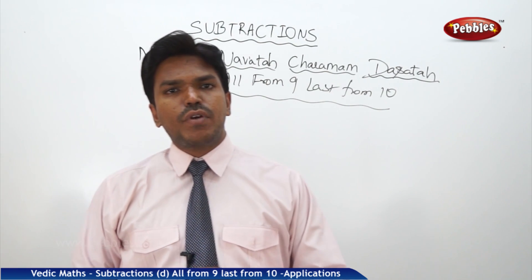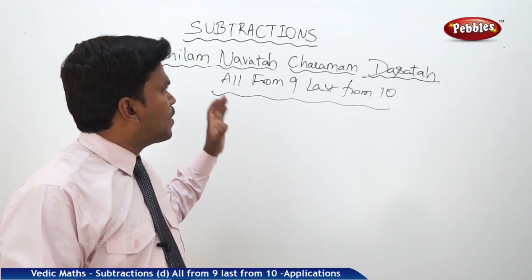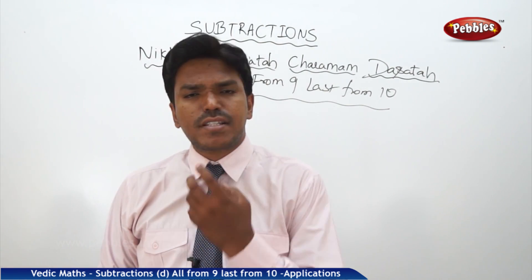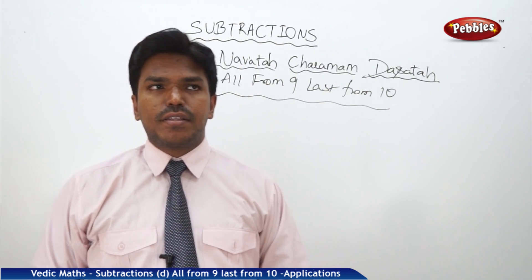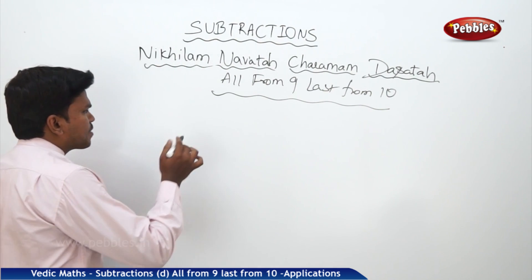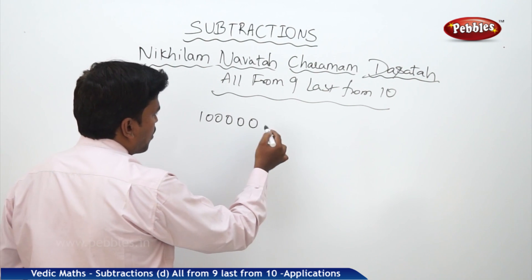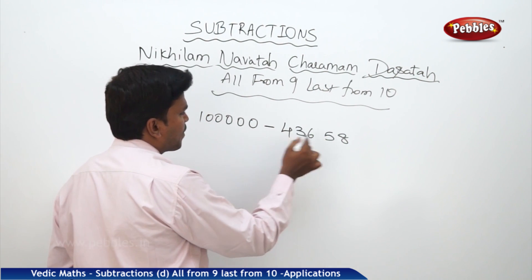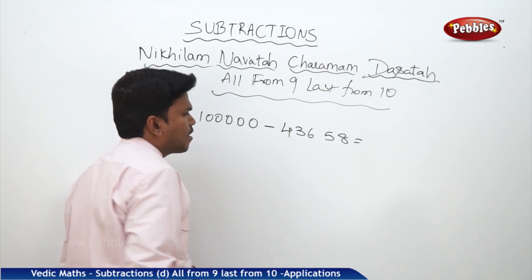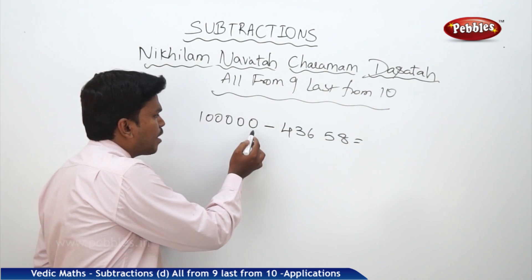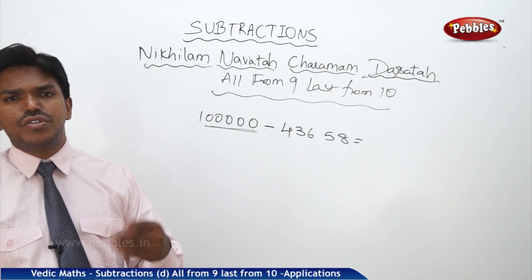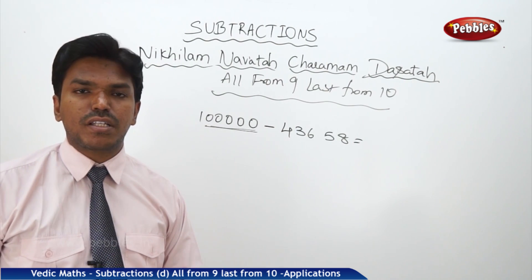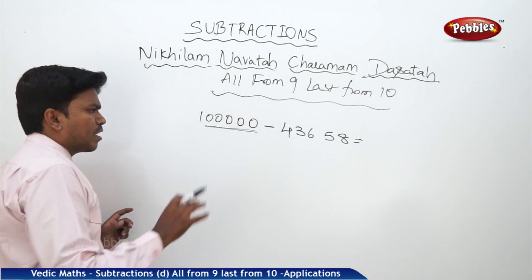Friends, in this session we are going to discuss another application of Nikhilam Navatashcaramam Dashatah — that is, 'all from nine, last from ten.' How can we use this concept in one more way? Whenever you are getting numbers like this — suppose I want to subtract one lakh minus 43,658, or 40,000 minus some number — whenever the minuend has many zeros, there is a very easy way to do this using 'all from nine, last from ten.'